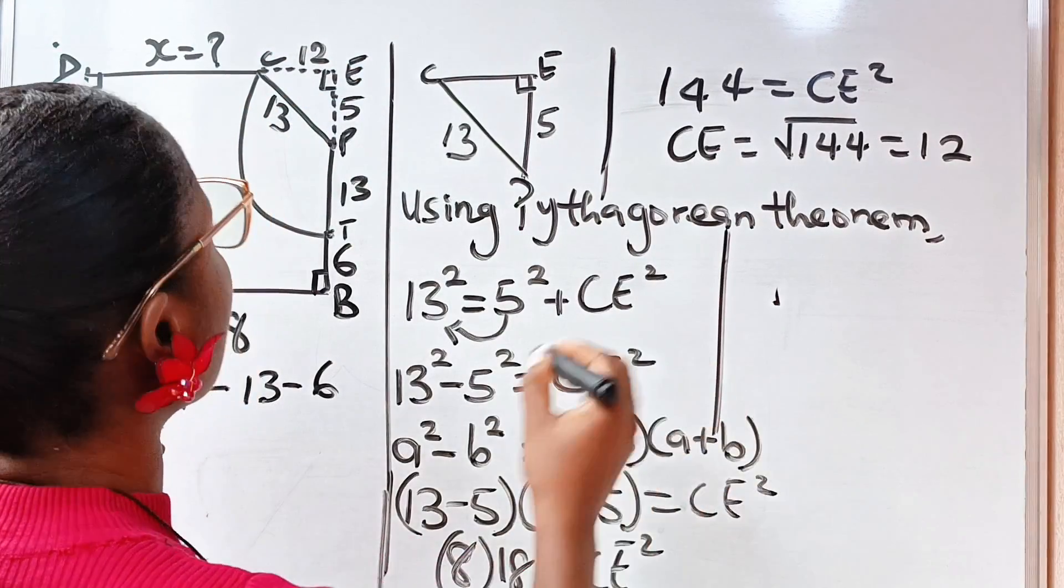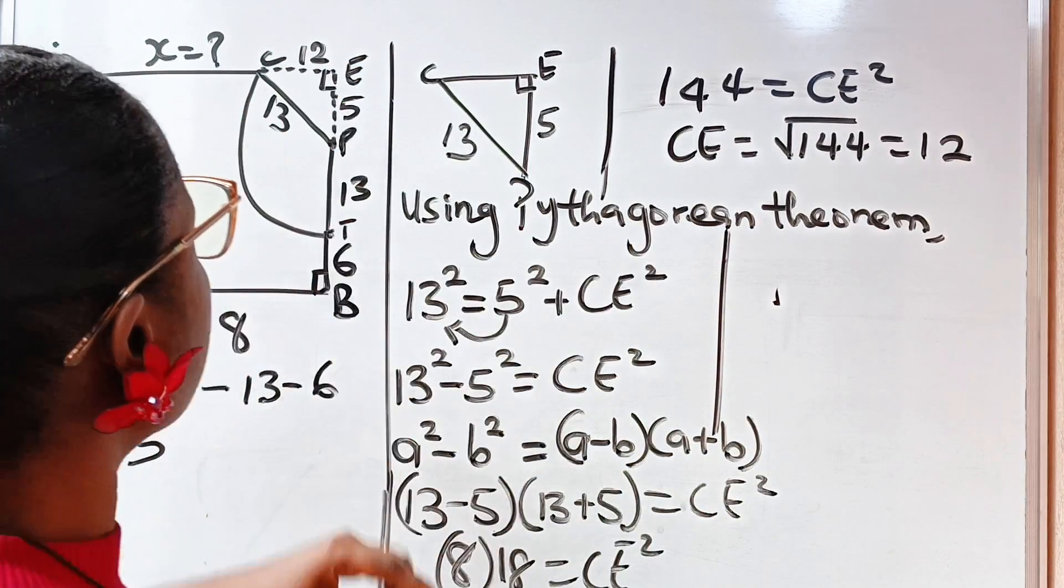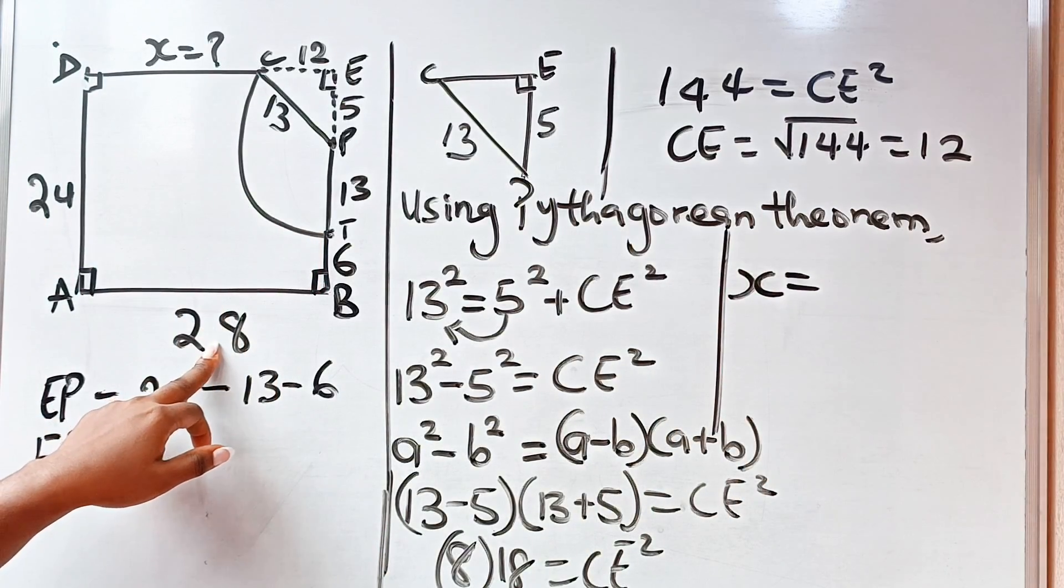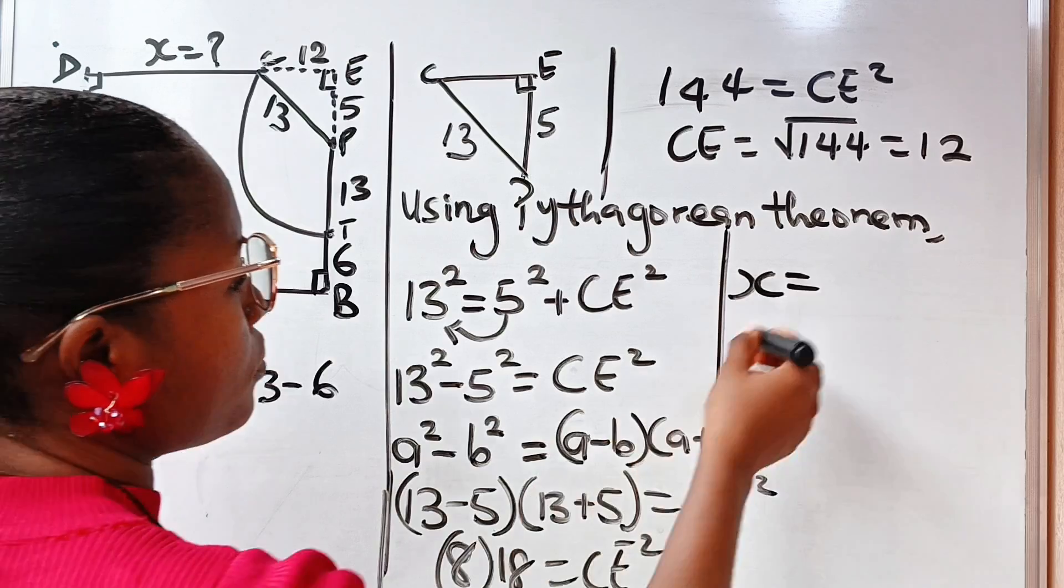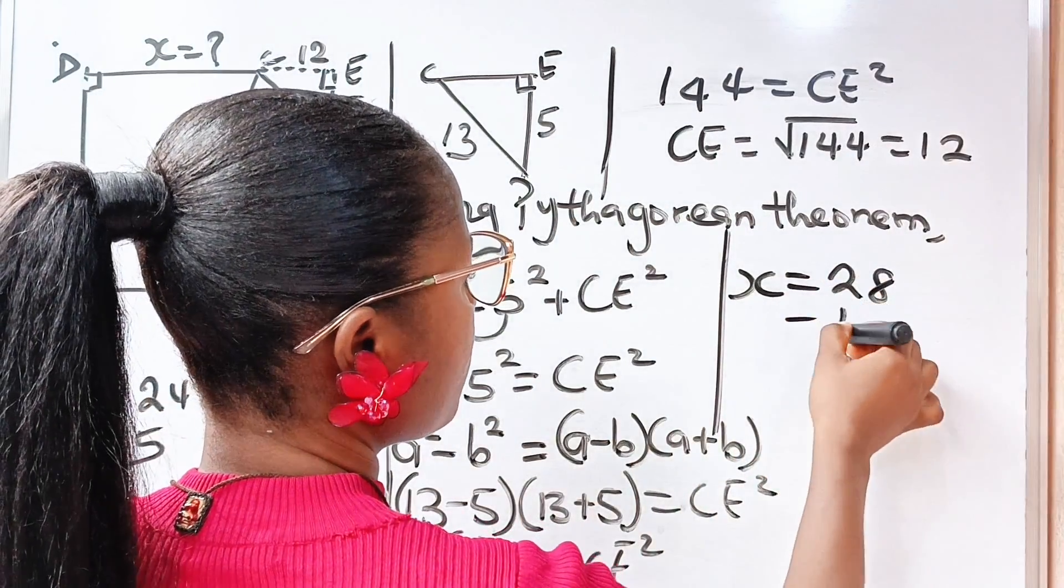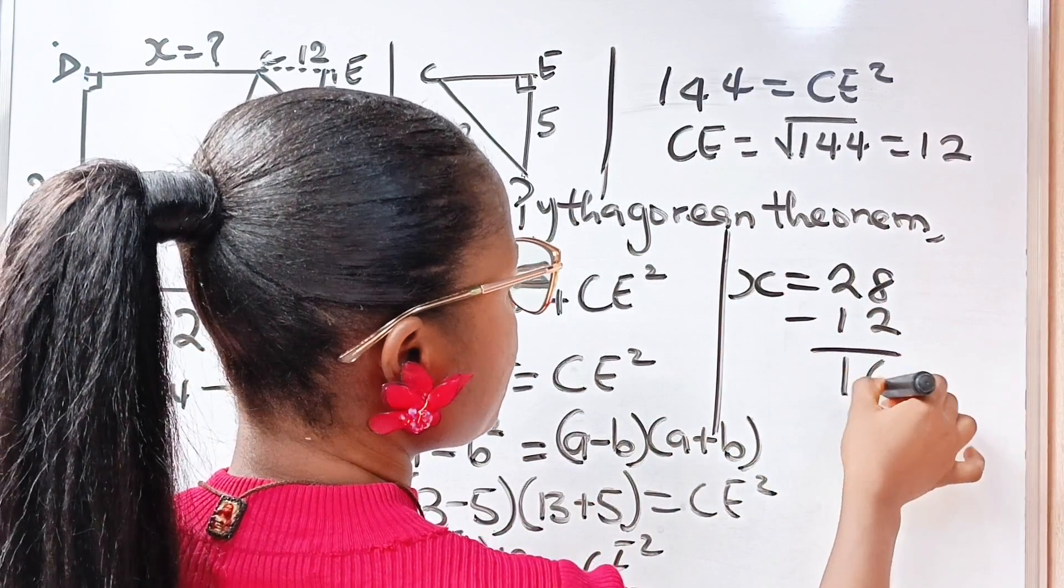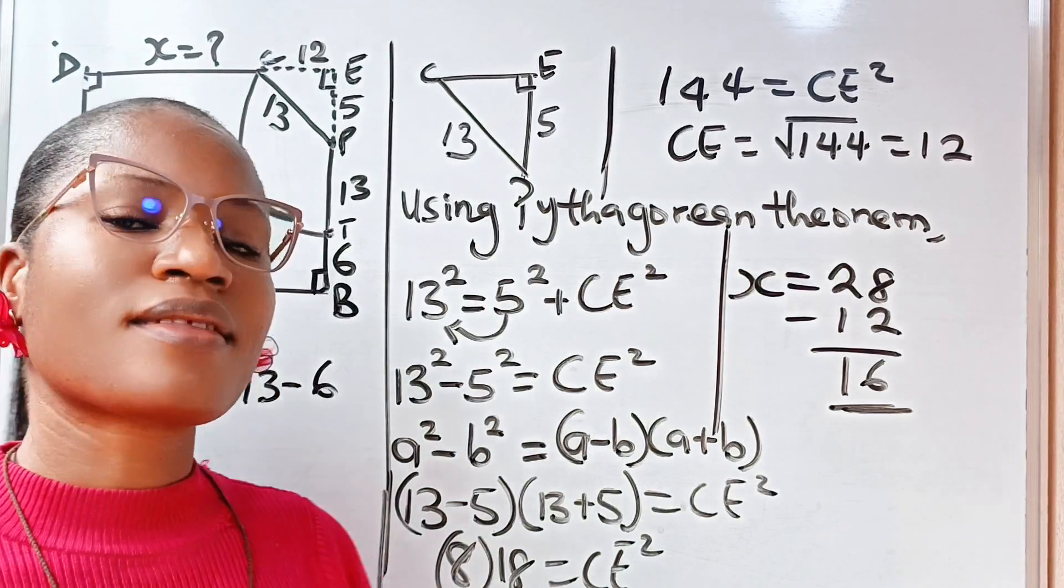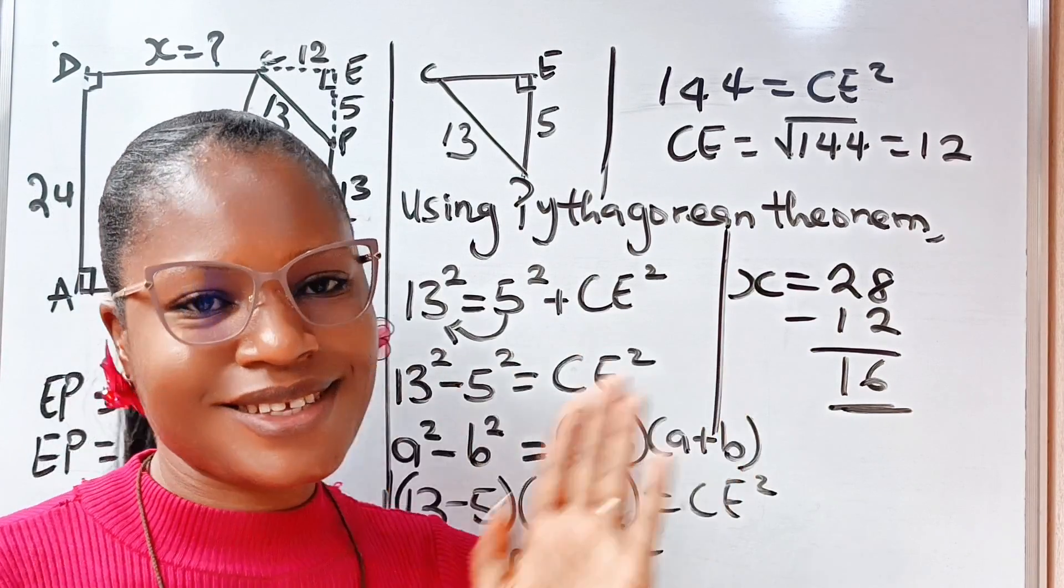Therefore, DC, which is x, is equal to 28 minus 12, which gives us 16. 16 units, and that is the answer. Thanks so much for watching.